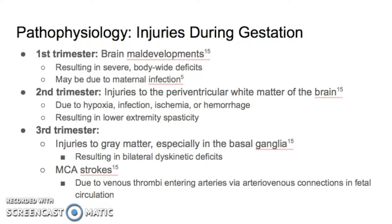Later in pregnancy, injuries tend to be to gray matter, either in the cortex or deeper in the brain, particularly in the basal ganglia, which is an area of high metabolic activity during this stage of development.